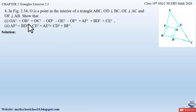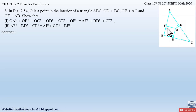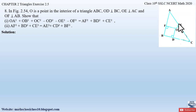We have to prove two parts. First: OA² + OB² + OC² − OD² − OE² − OF² = AF² + BD² + CE². Second: AF² + BD² + CE² = AE² + CD² + BF².